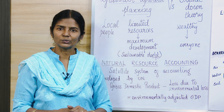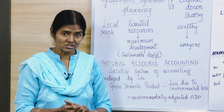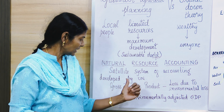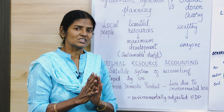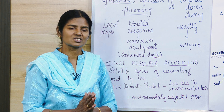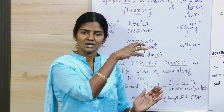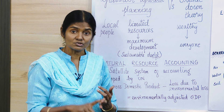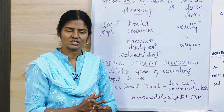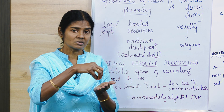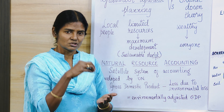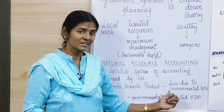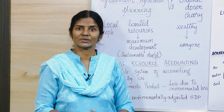Natural resource accounting was started by the UN because many countries launched projects without accounting for environmental loss. The gross domestic product had to be adjusted — we have to account for the loss due to projects: what happens to the environment, the loss of resources like water or wood. That loss must be subtracted from the GDP to get the environmentally adjusted GDP. This is what natural resource accounting is about.